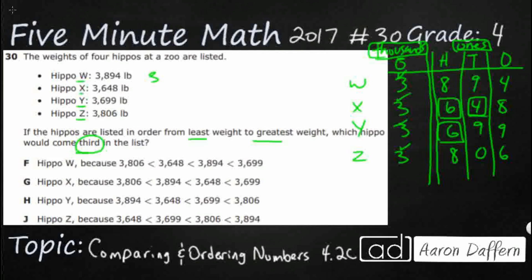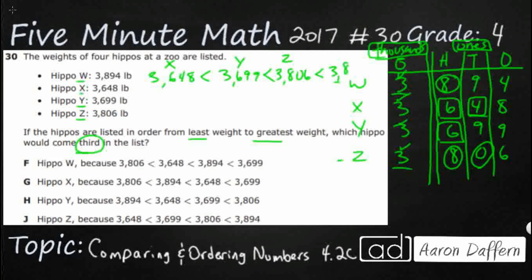So the smallest number is three thousand six hundred forty-eight — that's X — and I'll put a less-than sign. Next is Y at three thousand six hundred ninety-nine. Now going back to W and Z, they both have a three in thousands and an eight in hundreds, so we go to the tens spot. The zero in Z is smaller than the nine in W, so Z comes next at three thousand eight hundred six — and that's my third hippo — followed by W at three thousand eight hundred ninety-four as the largest.